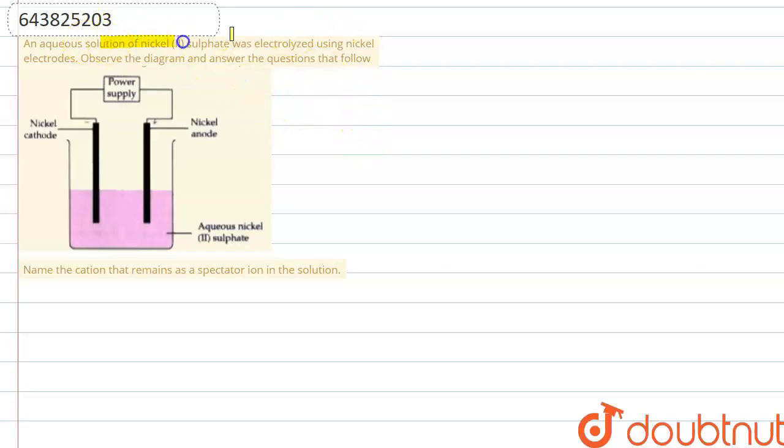Let me explain it to you. An aqueous solution of nickel sulfate was electrolyzed using nickel electrodes. Observe the diagram and answer the question: Name the cation that remains as a spectator ion in the solution.